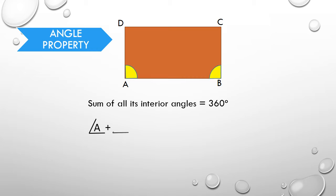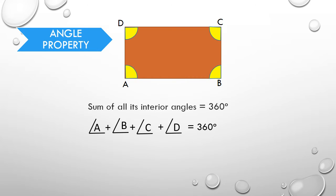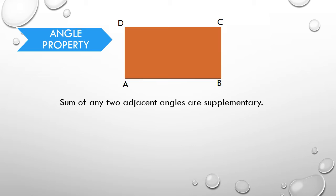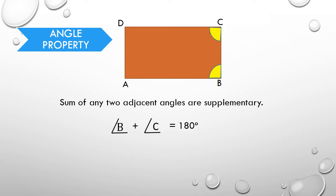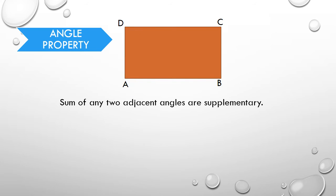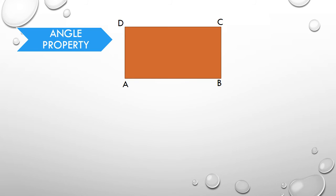That is, angle A plus angle B plus angle C plus angle D is equal to 360 degrees. Then, like a parallelogram, the sum of any two adjacent angles of a rectangle is also supplementary. That is, angle A plus angle B equals 180 degrees, angle B plus angle C equals 180 degrees, angle C plus angle D equals 180 degrees, and angle D plus angle A is also equal to 180 degrees.